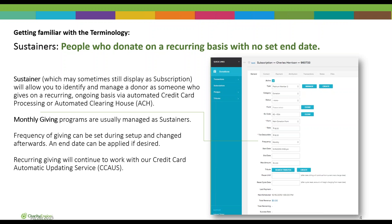Monthly giving programs, if you have one, those are usually sustainers. The frequency of giving can be set up during setup or changed afterwards, and an end date can be applied if desired. For those who use our credit card automatic updating service, this will still work with that. If you're not currently using it but you do have a monthly giving program or sustainers, you may want to reach out to us, because real high percentages of credit cards expire or turn over every month and you don't want to lose a regular donation.